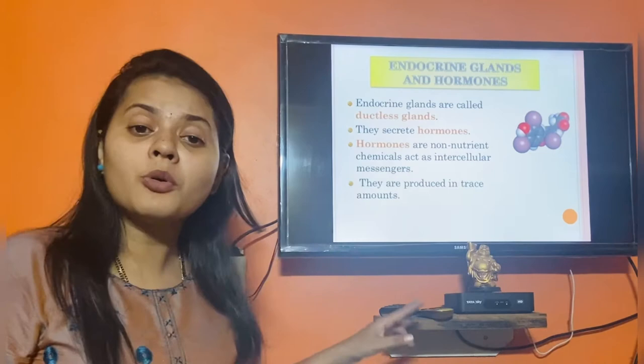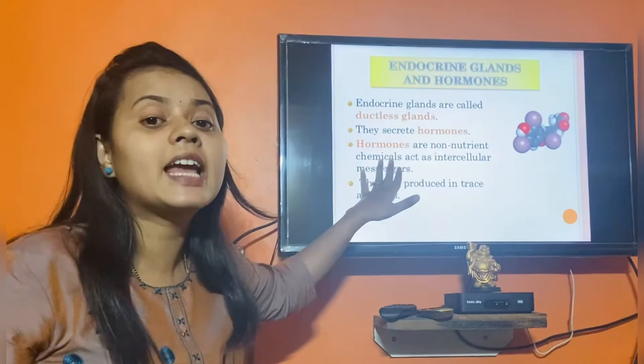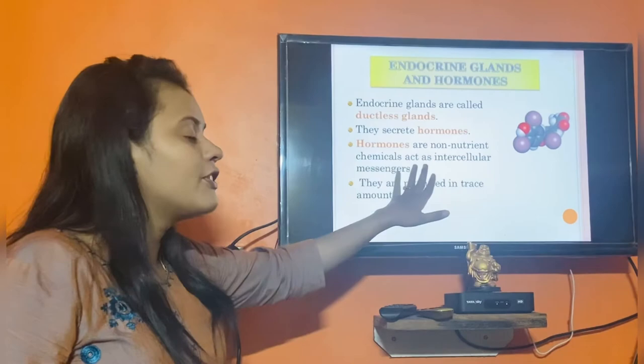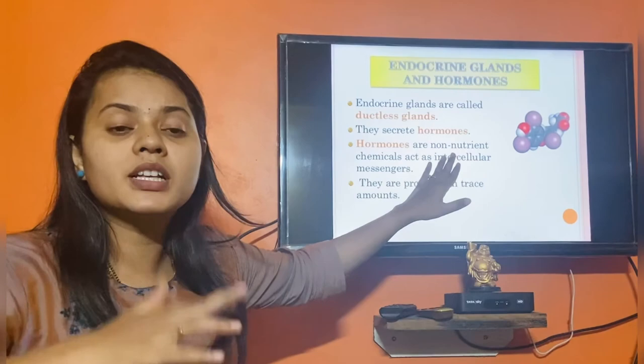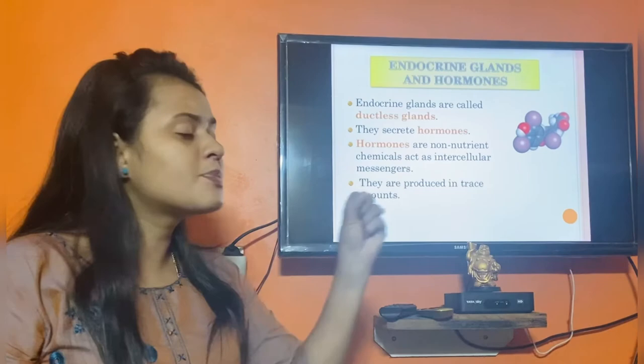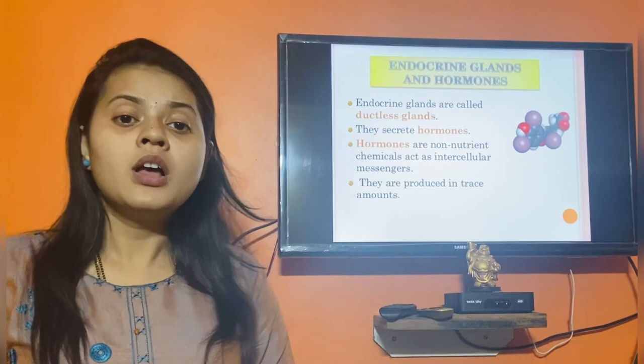Hormones are, in simple words, chemicals. Their definition: they are non-nutrient chemicals — they do not give any nourishment. They act as intercellular messengers, communicating between cells and transmitting signals within the body. They are always produced in trace amounts. This is the introduction to this chapter. In the next video I am going to tell you about the glands in detail. Thank you everyone.